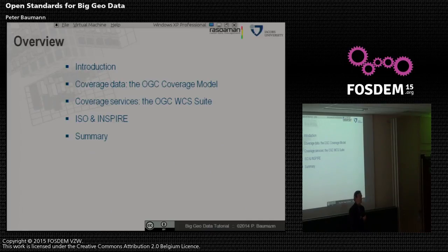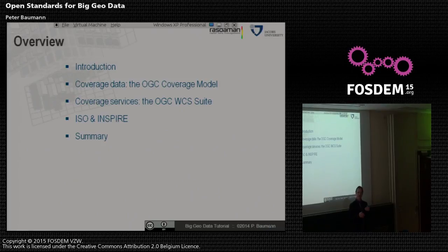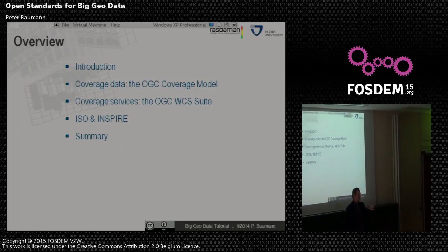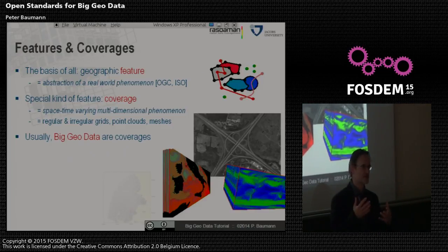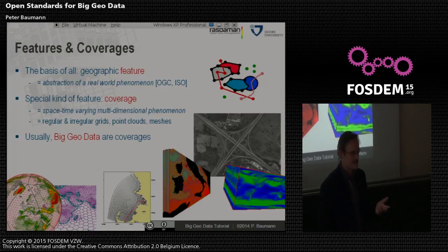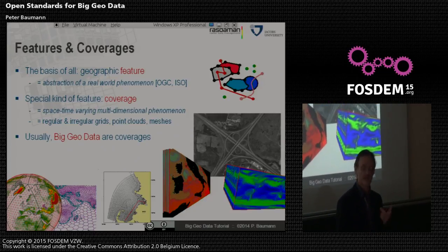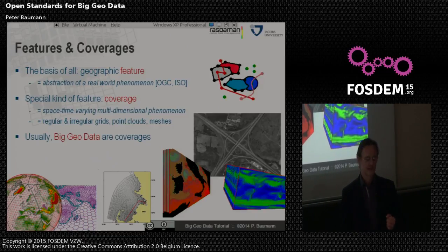Coverage is the keyword defined in the geostandards, and that is what I want to bring to you: the coverage data model of OGC, and after that the service model — two distinct separate things. This has ramifications beyond OGC, also in ISO, INSPIRE, and others. In practice, we talk about regular grids like ortho images, about irregular grids, about point clouds, and about meshes. That is actually what typically contributes the big data in terms of volume.